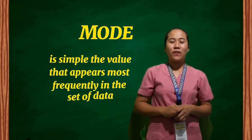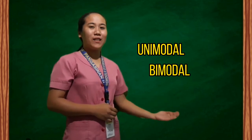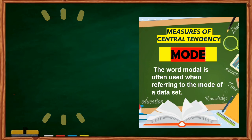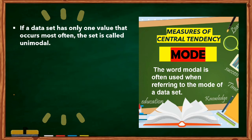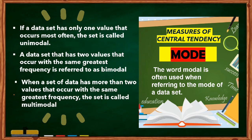Mode is simply the value that appears most frequently in the set of data. It could be unimodal, bimodal, or multimodal. The word modal is often used when referring to the mode of a dataset. If a dataset has only one value that occurs most often, the set is called unimodal. A dataset that has two values that occur with the same greatest frequency is referred to as bimodal. When a set of data has more than two values that occur with the same greatest frequency, the set is called multimodal.